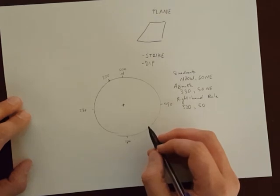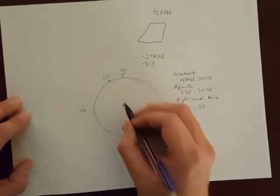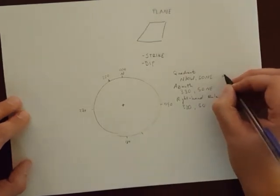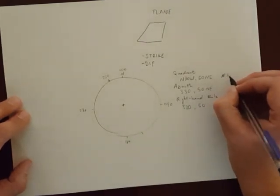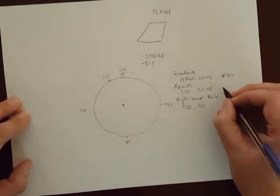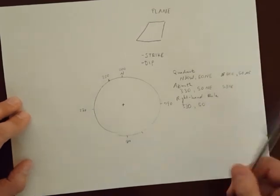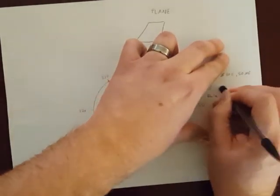I could also have recorded the strike for quadrant and azimuth notation as south 30 east. For azimuth, that would be 150. So for the quadrant and azimuth notations, this is perfectly acceptable.